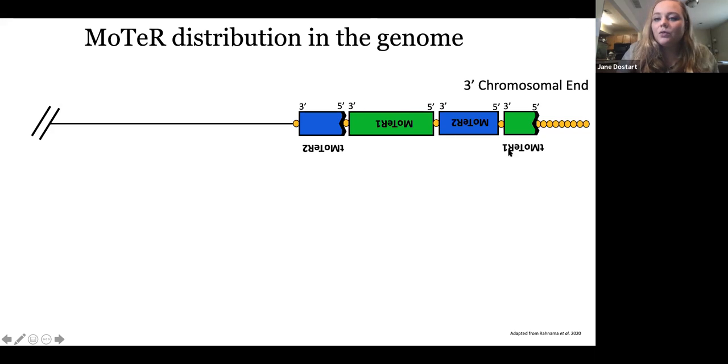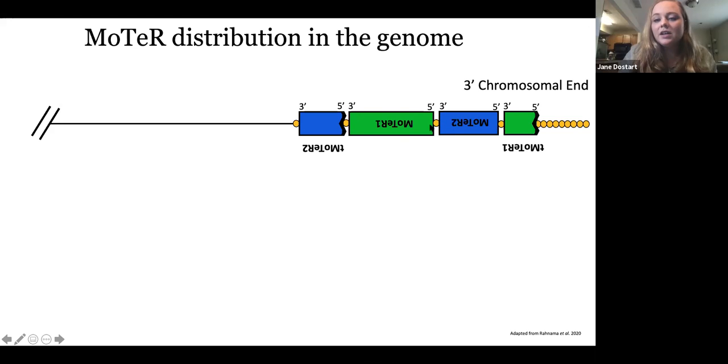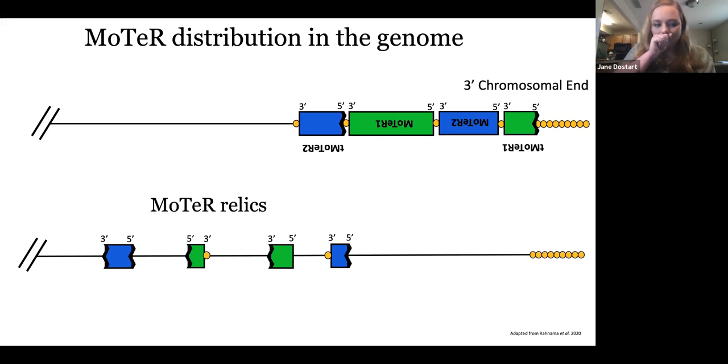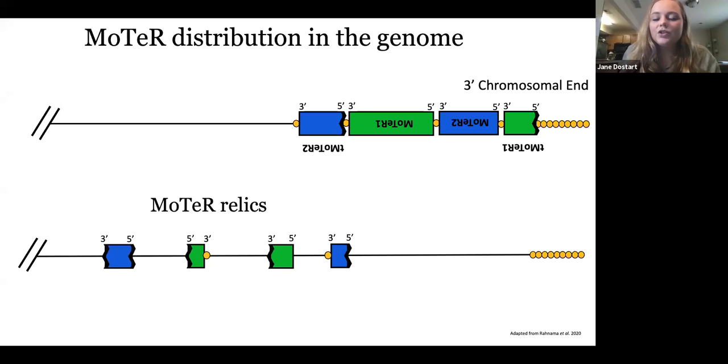But typically, when you have an array like this, they're separated by these interstitial telomere repeats, which are noted with these yellow circles here. And depending on the number of these repeats between MoTeR elements, this causes instability and breakage within telomeres. And we think that MoTeRs are endemic to the telomere, but we've actually found cases of truncated MoTeRs within the interior of the genome. And these we call MoTeR relics. These, we think, are note breakage and repair events that have shifted them out of the telomere into the interior of the genome.